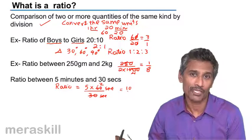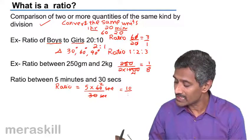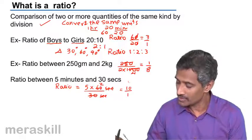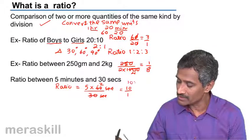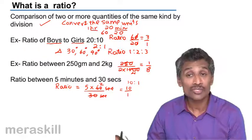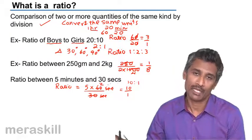Now you're not going to write it as 10 — here comes a key difference of ratio — you write it as 10 is to 1. So the ratio of 5 minutes to 30 seconds is 10 is to 1.